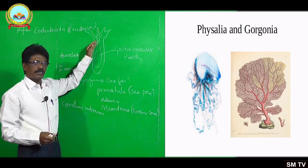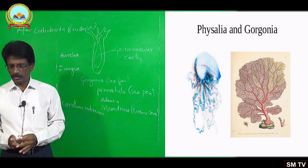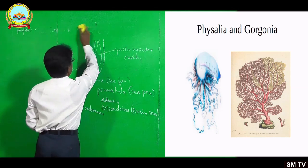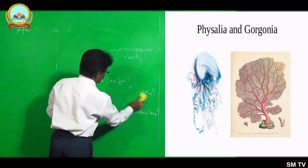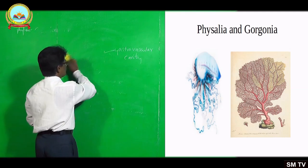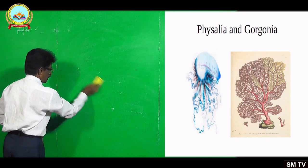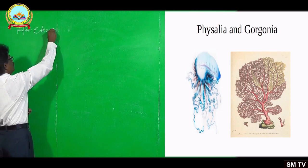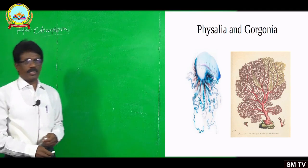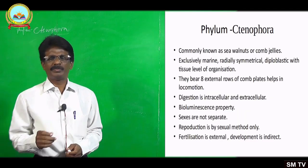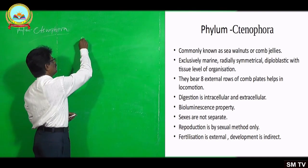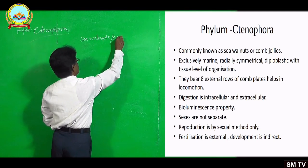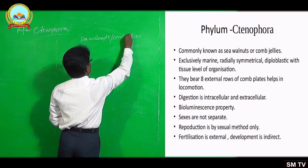So these are the general characters and examples of Phylum Coelenterata or Cnidaria. One more phylum is Ctenophora. Ctenophora is one of the minor phyla, as it includes very few animals in the group. Again, they are exclusively marine forms, commonly known as sea walnuts or comb jellies.